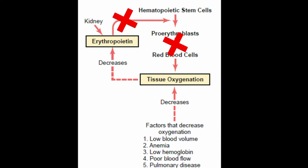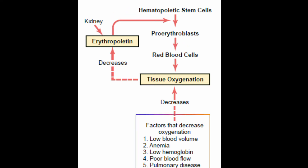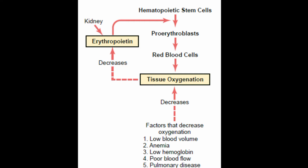There are certain factors that decrease tissue oxygenation, such as low blood volume, anemia, low hemoglobin, poor blood flow, or pulmonary diseases. These factors result in decreasing tissue oxygenation, which triggers a feedback mechanism that stops the signal to decrease erythropoietin. As a result, the cycle continues until there is enough oxygen for the tissues.